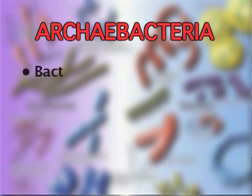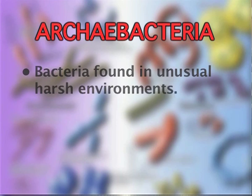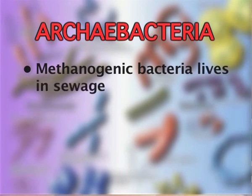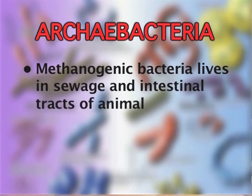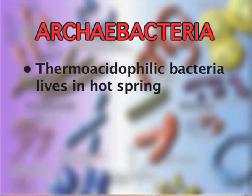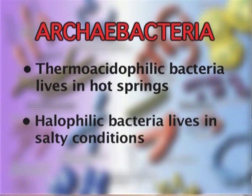Archaebacteria include all the bacteria that occur under harsh conditions. For example, methanogenic bacteria — they live in the sewage, and in fact these are the ones which are used for sewage treatment. They are also found in the intestinal tract of cows. Thermoacidophilic bacteria live in hot springs. On the contrary, halophilic bacteria live in salty lakes and rivers.